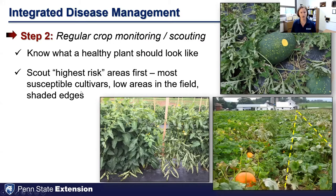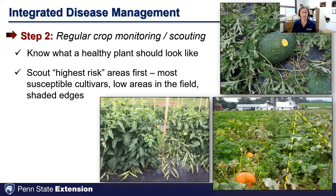The second step of integrated disease management is regular crop monitoring and scouting. One of the first things to know is what a healthy plant should look like. For example, the watermelon cultivar 'Moon and Stars' has speckling that is the way it's supposed to look — not spray damage. Knowing what a healthy plant looks like is important, as is scouting highest-risk areas first: cultivars more susceptible to a particular disease, or lower or shaded areas of the field that hold moisture longer and therefore have higher disease risk.